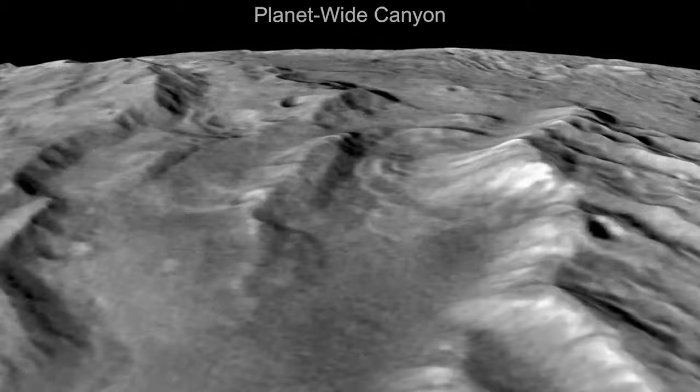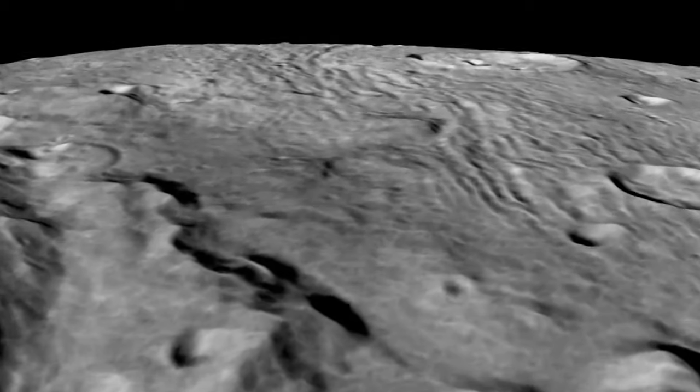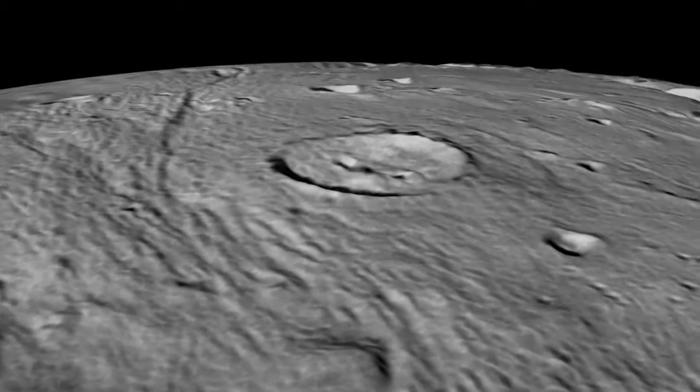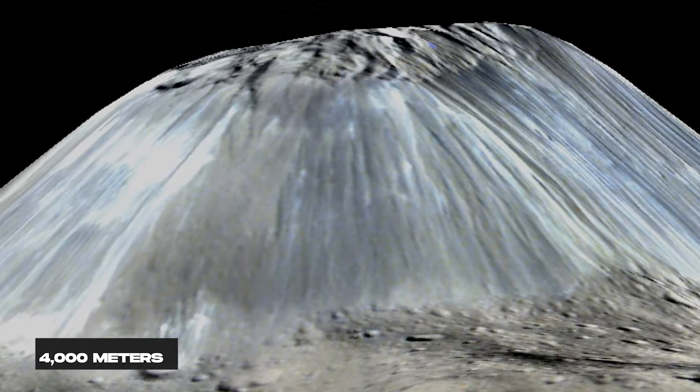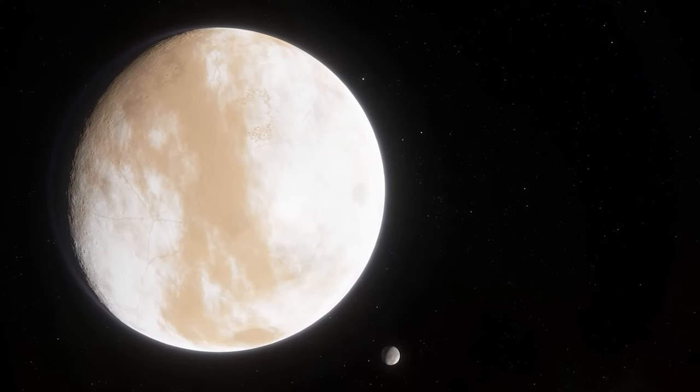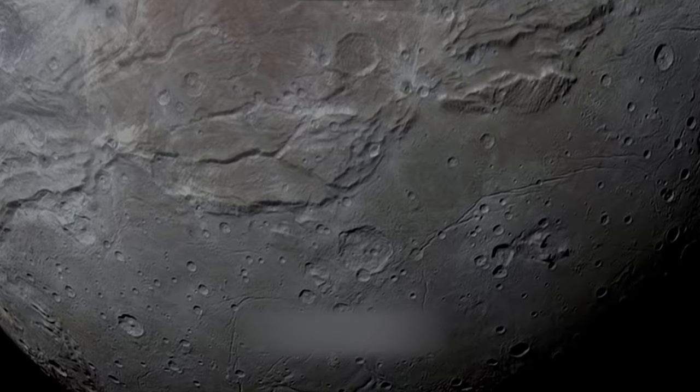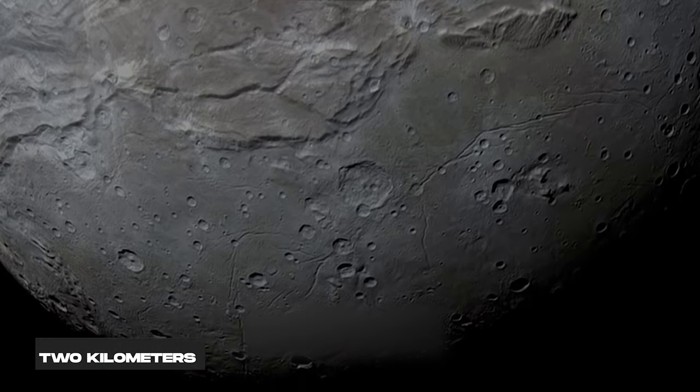Within Vulcan Planum stands the tallest peak on Charon, Kubrick Mons, with a diameter of around 40 kilometers and an estimated height of up to 4,000 meters.